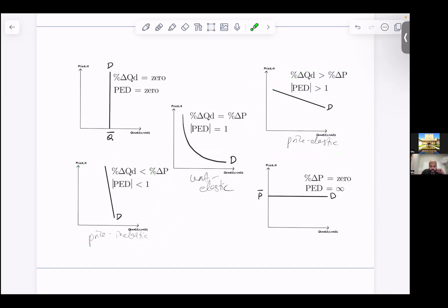...perfectly inelastic. That basically happens when quantity demanded is fixed, is unchanged – the percentage change in quantity is zero. Now remember, it's percentage change in quantity divided by percentage change in price, so zero divided by the percentage change in price, PED will always equal zero here. We say demand is perfectly inelastic, quantity is fixed.